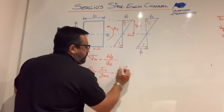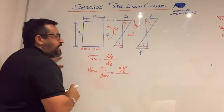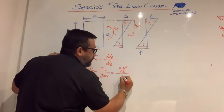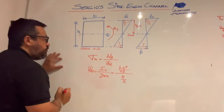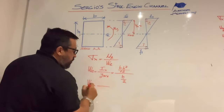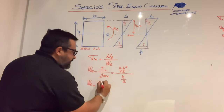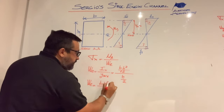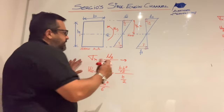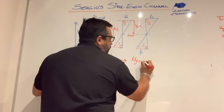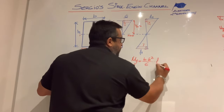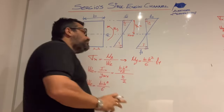Let's develop the equation. For a rectangular section, the second moment of inertia follows the standard equation, and Ymax is half of the height of the section, so we have H divided by 2. Working this out, we get that the elastic resistant modulus is equal to B·H² divided by 6. So the elastic yield bending moment for this rectangular section is MY equal to (B·H²/6) multiplied by the yield stress limit of the material, Fy.